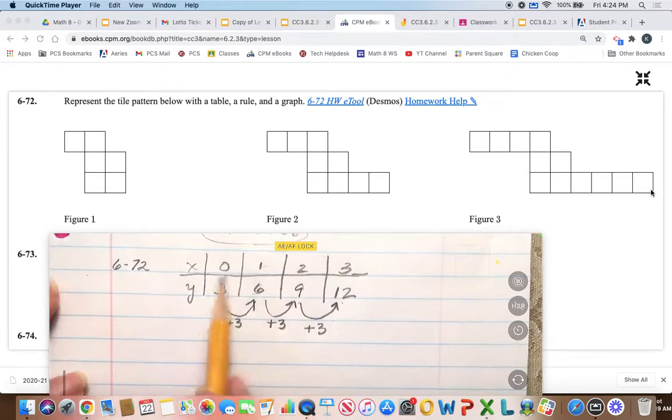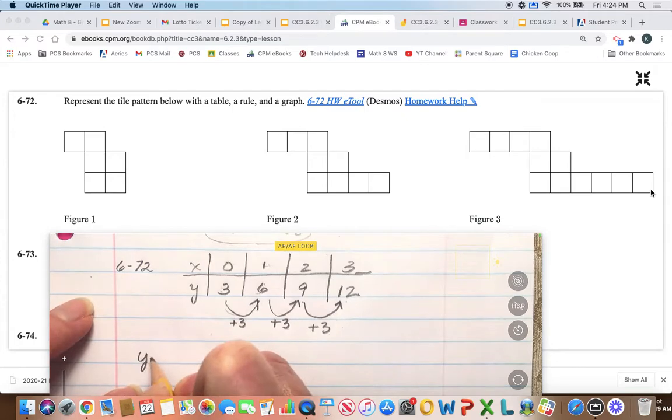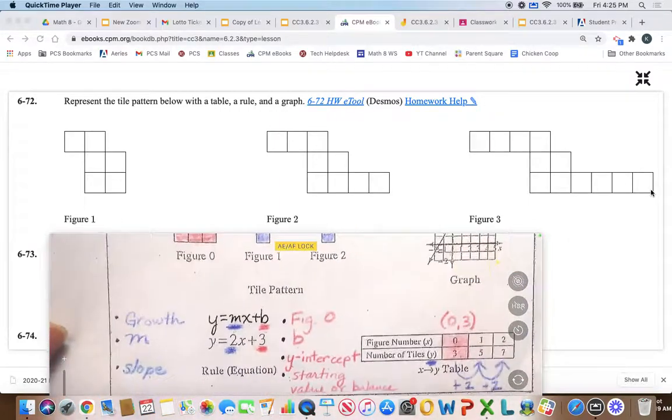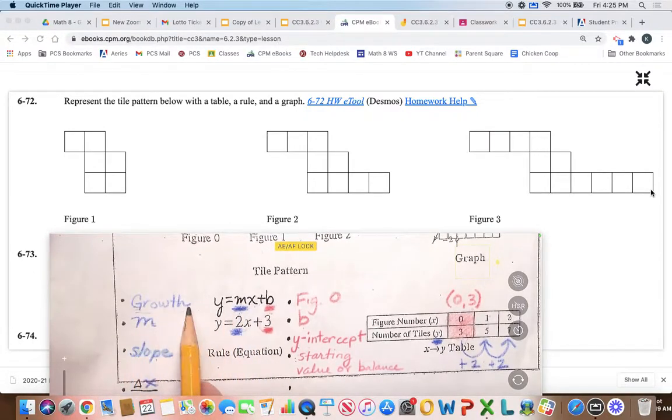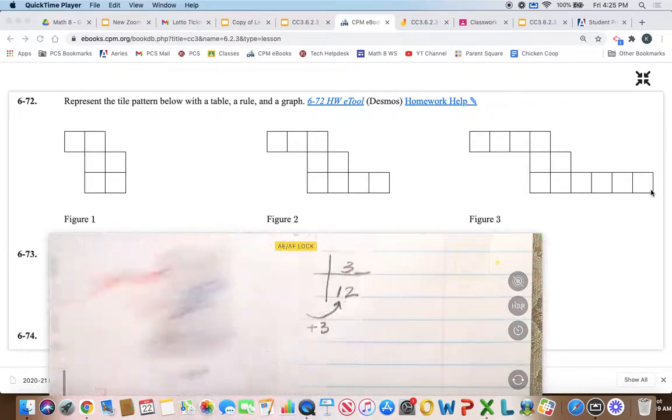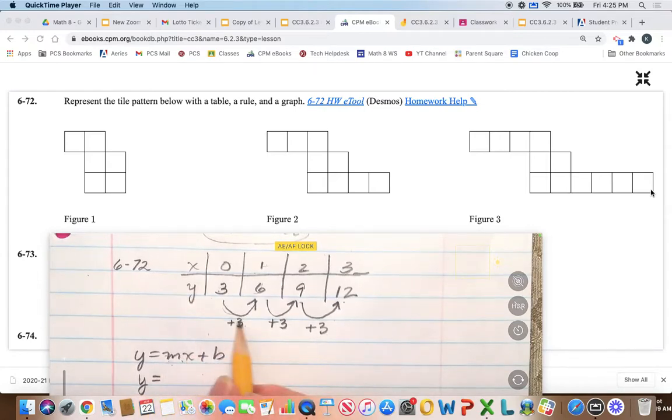Okay, so now we know what figure zero is, and we've already built our table, so the next thing we'll do is build our rule, and our rule goes by the form y equals mx plus b. And if we go back to this and take a look, we know that m is representing the growth, and so the amount that we increase our tiles by is three, and so we know that m is going to be three, so it's three times x.